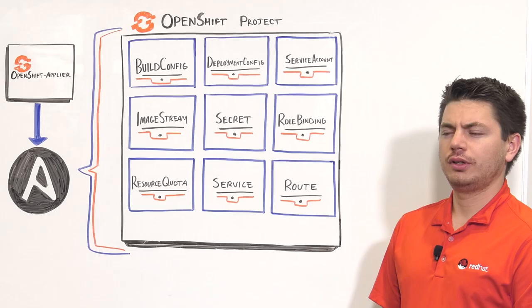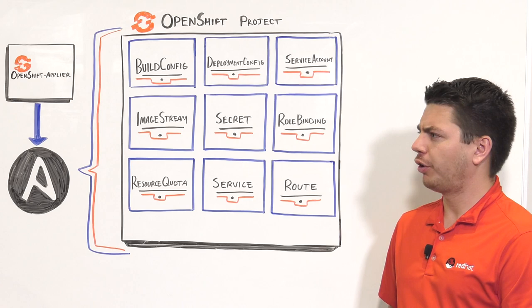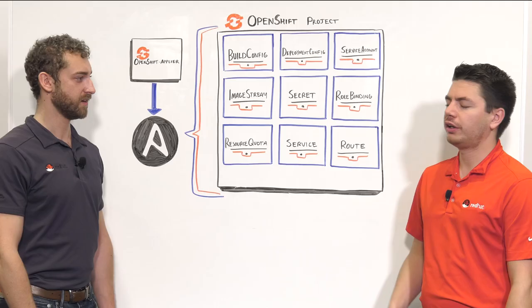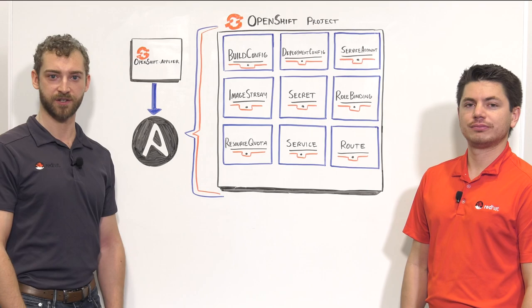That actually sounds perfect for what we're using. And since it's an Ansible role, I can install it with Ansible Galaxy and it should be pretty easy to get going. I'd like to know where the documentation is so we can get started right away. To start implementing some of these practices, visit redhat.com/services to learn more about how our consulting services can help you, or speak to your existing account representative. Thank you.